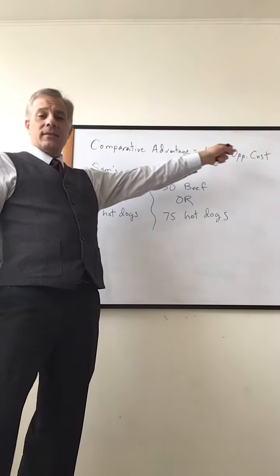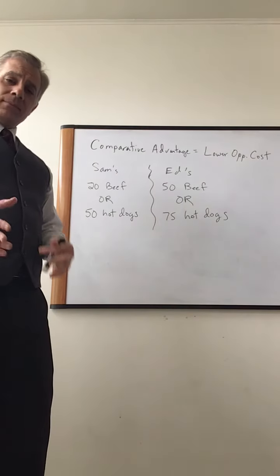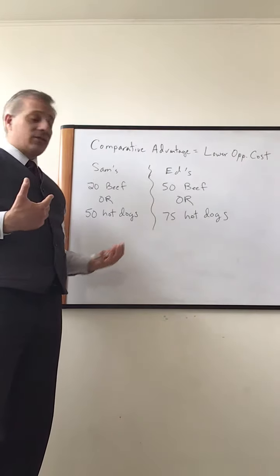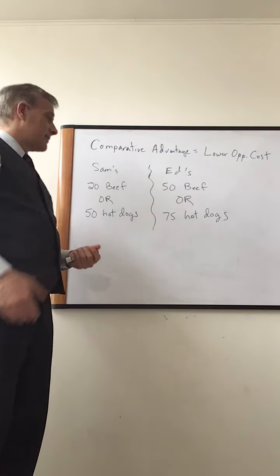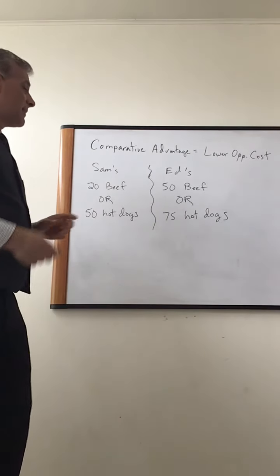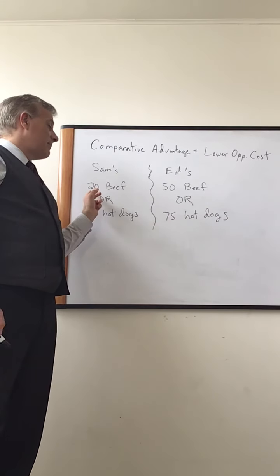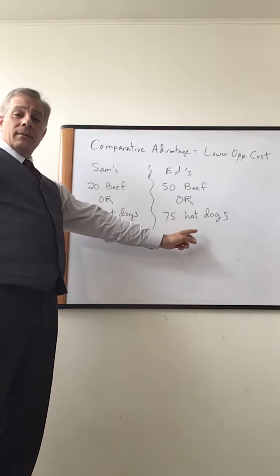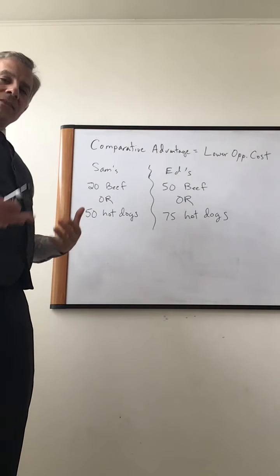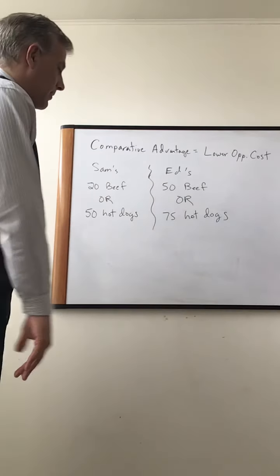Comparative advantage is when the firm has a lower opportunity cost. Absolute advantage is the super easy one, right? Can I just do something better than somebody else? So if we're looking at Sam's beef stand and Ed's beef stand, Ed has absolute advantage in everything. He can make 50 beef to 20 beef. He can make 75 hot dogs to 50 hot dogs. So absolute advantage is just very simple in that regard.